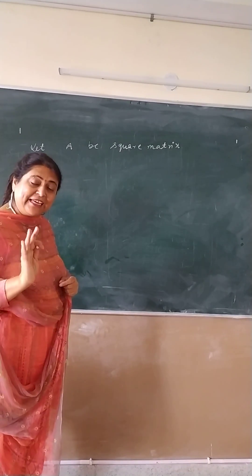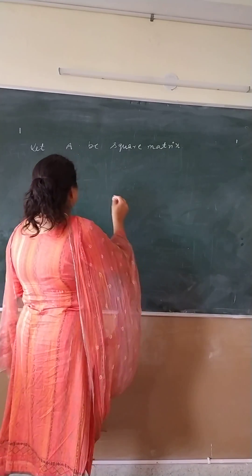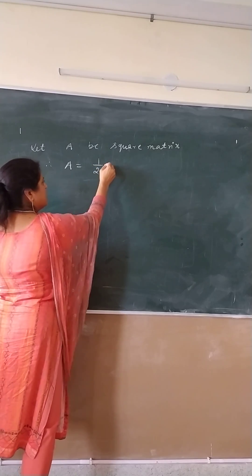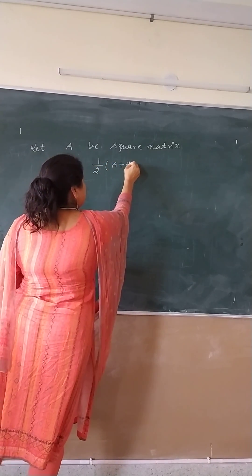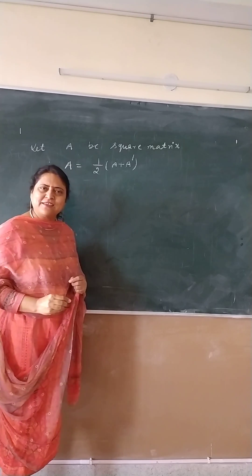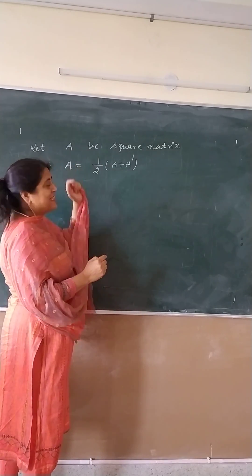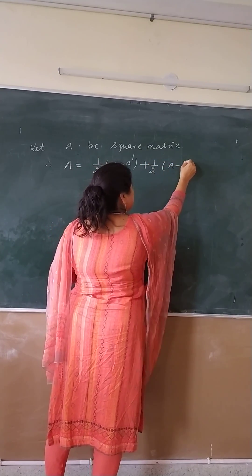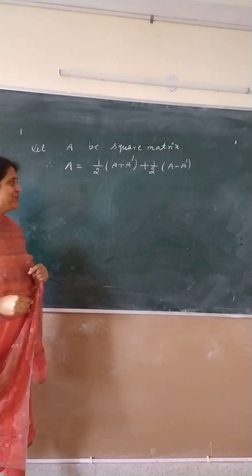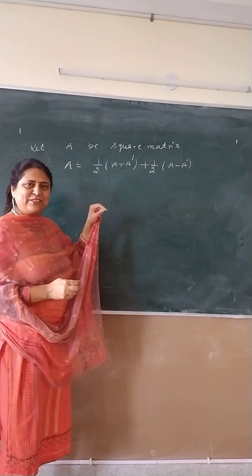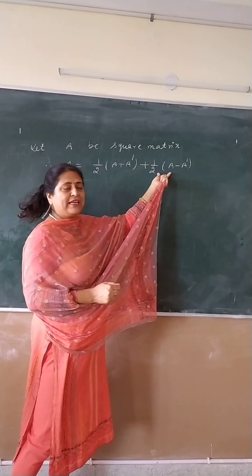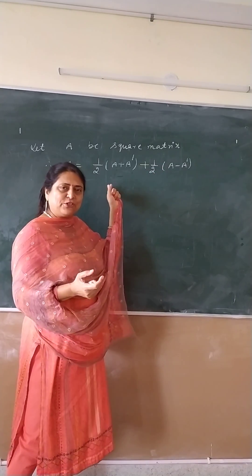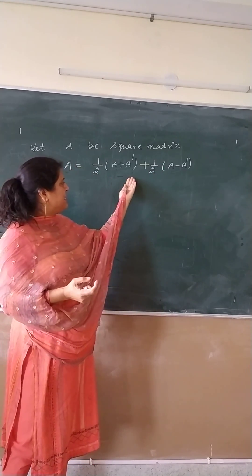Therefore, it can be written as: half of A plus A-dash, plus half of A minus A-dash. You know, A-dash is the transpose of this matrix. This half A plus half A gives A, and half A-dash minus half A-dash cancels, so we can write A in this way.